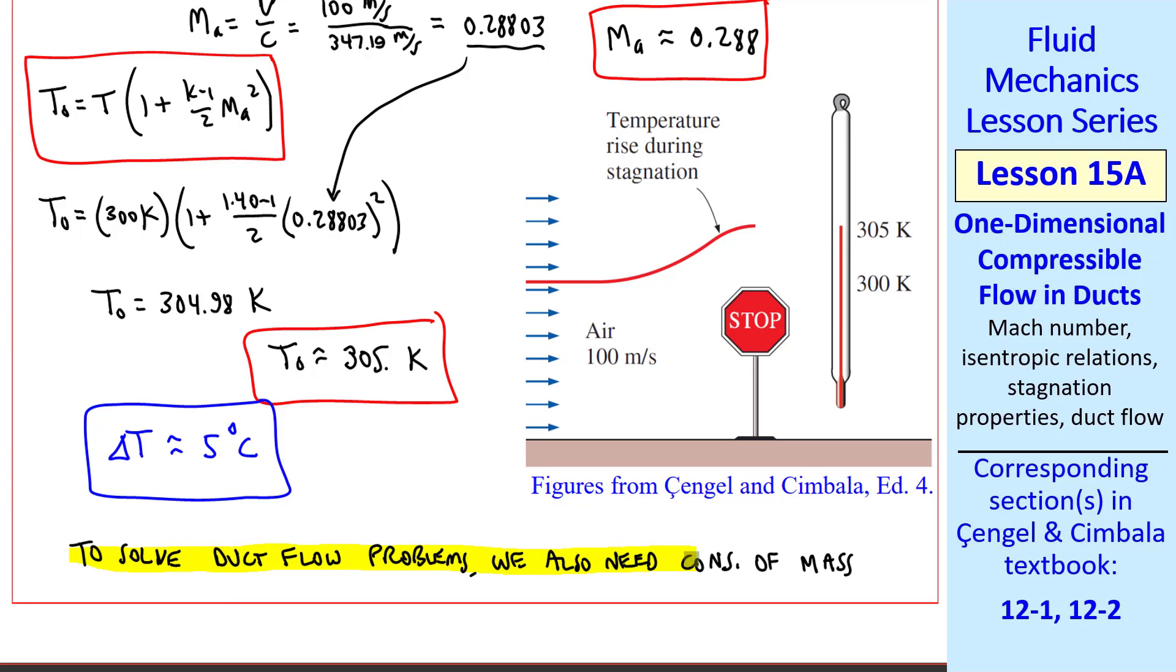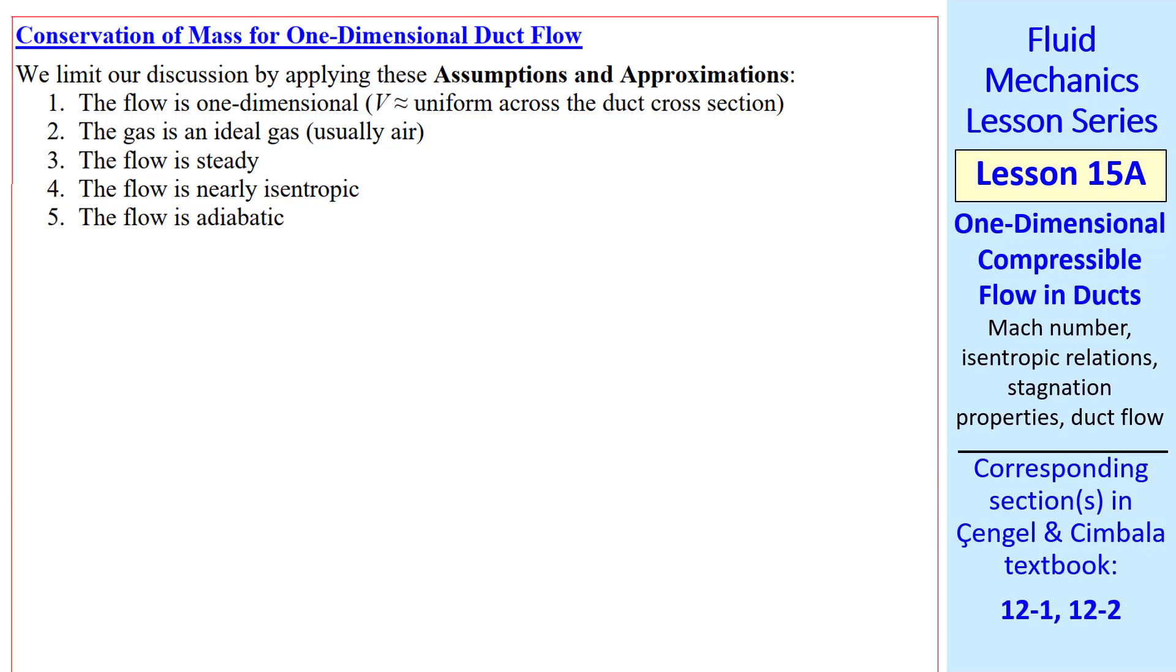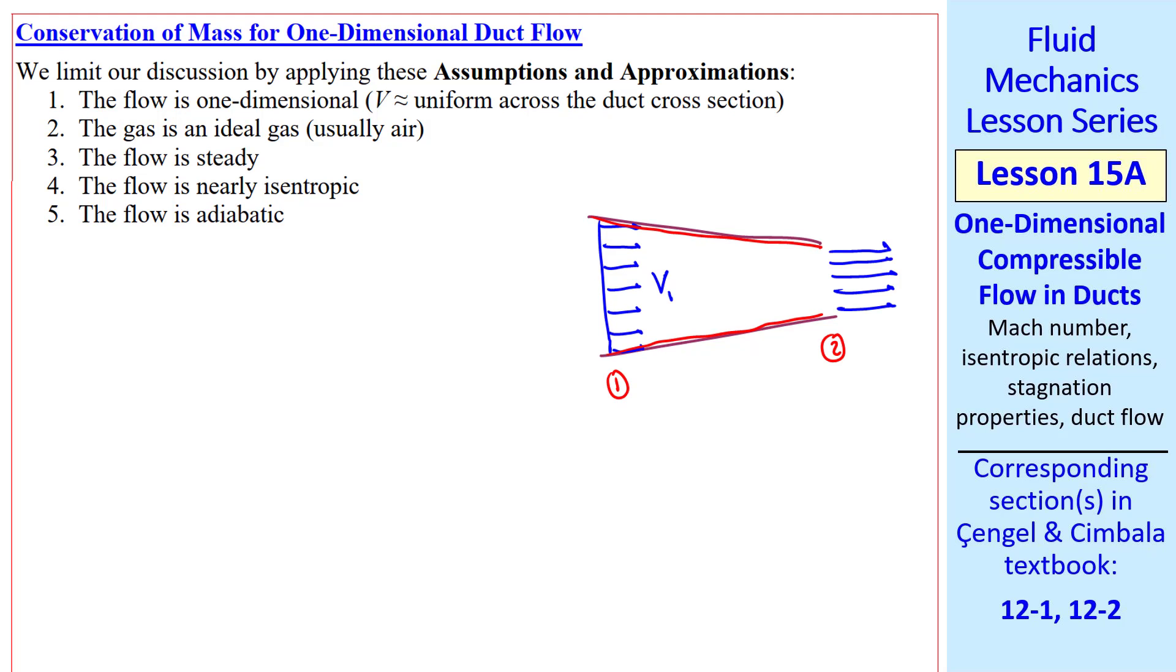To solve duct flow problems, we also need conservation of mass. Let's consider conservation of mass for 1D duct flow. Here's a list of our assumptions and approximations. The flow is one-dimensional, meaning V is approximately uniform across the duct section. This implies we're ignoring the very thin boundary layer along the walls. Average speeds V1 and V2 are all that is necessary to analyze these flows. We also consider only ideal gases, which will usually be air. The flow is steady, nearly isentropic, and adiabatic, which allows us to have H0 equal constant and T0 equal constant.